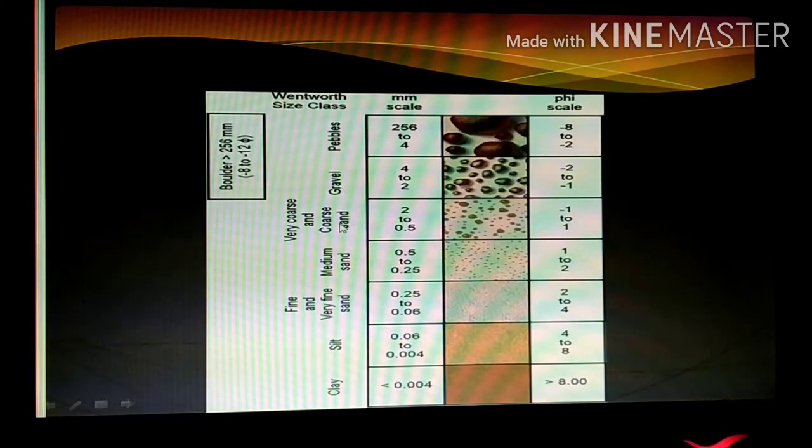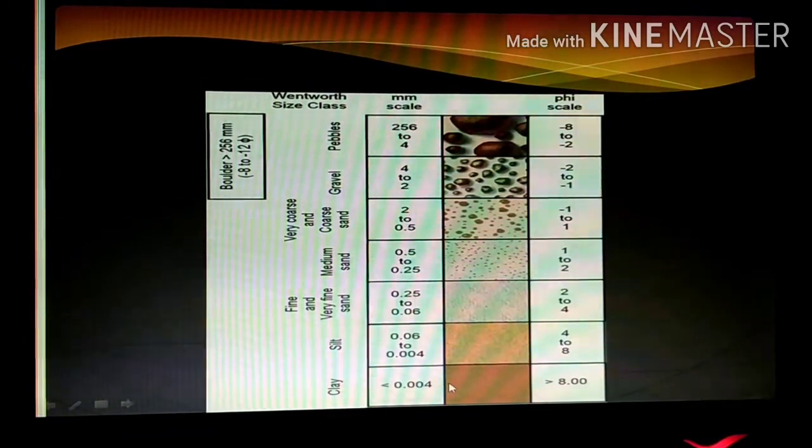2 to 0.5 is a very coarse and coarse sand. 0.5 to 0.25 is the medium sand. And 0.25 to 0.06 is a fine and very fine sand. And 0.06 to 0.004 we have silt. And less than 0.004 we consider it as clay.